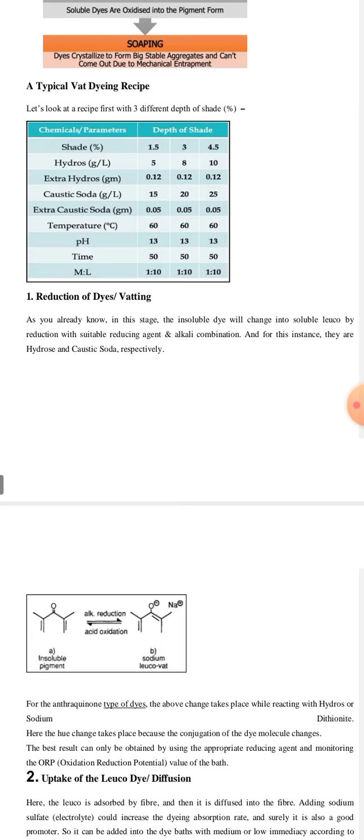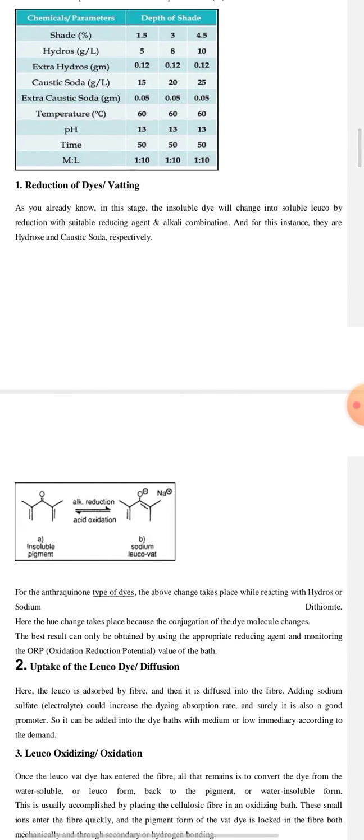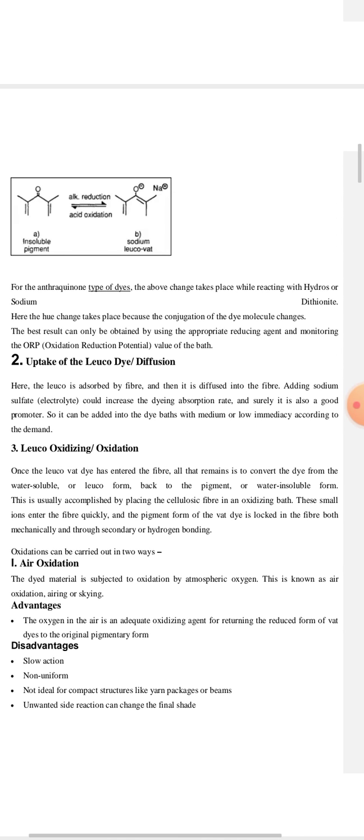Now, let us explain the steps one by one. First is reduction of dyes or vatting. I have explained earlier that in this stage, insoluble dye will change into soluble leuco form by reduction with suitable reducing agent and alkali combination. And for this instance, they are hydrosulfite and caustic soda. But for the anthraquinone types of dyes, the above changes take place while reacting with hydros or sodium dithionite.